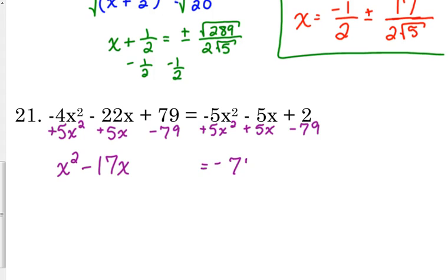Alright. So, here we go. Completing the square. a is equal to 1. So, we don't have to deal with that GCF thing. So, we're just going to divide negative 17 by 2. That does not divide evenly. So, we leave it and we square it. Well, I know that 17 squared is 289 because of our previous problem. And 2 squared is 4. So, that's what we are going to add to both sides.